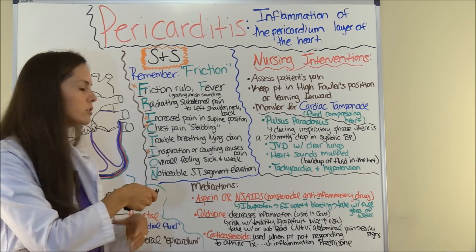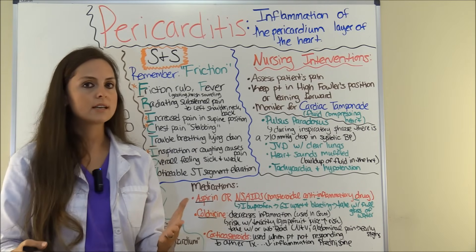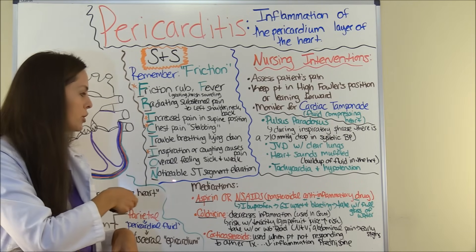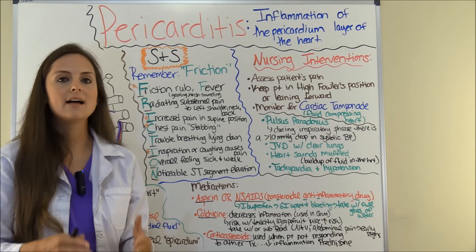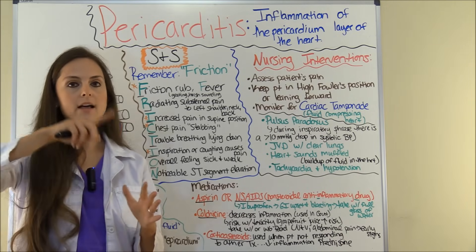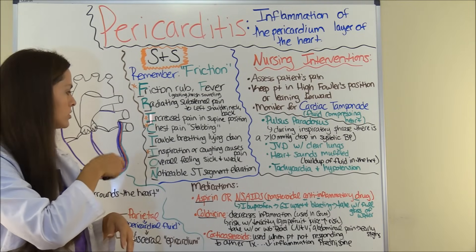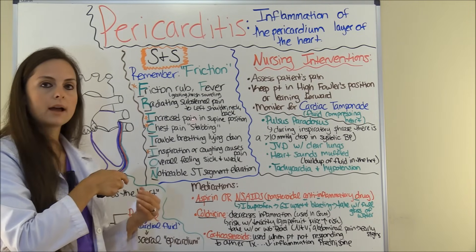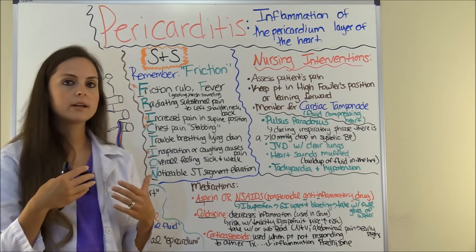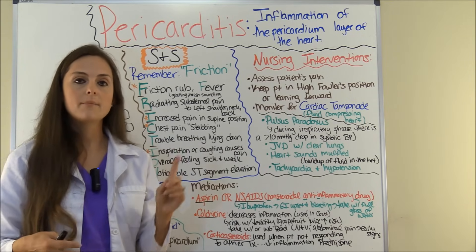O is for overall just feeling sick and weak — they feel unwell in addition to having all these other signs and symptoms. N is for noticeable ST segment elevation, which you will see on an EKG. The friction rub, increased pain in the supine position, substernal chest pain, and pain with inspiration are typically the most common hallmark signs and symptoms of pericarditis.